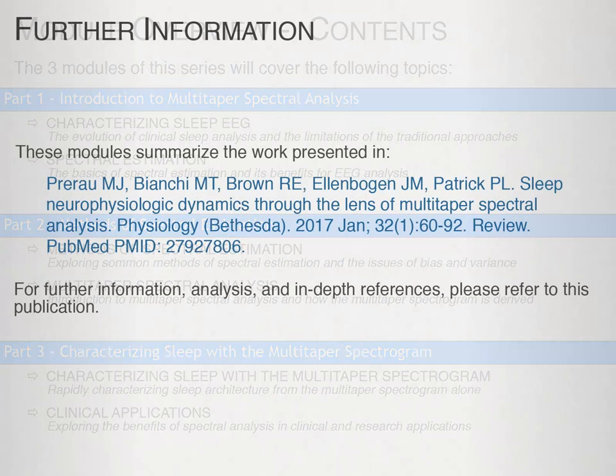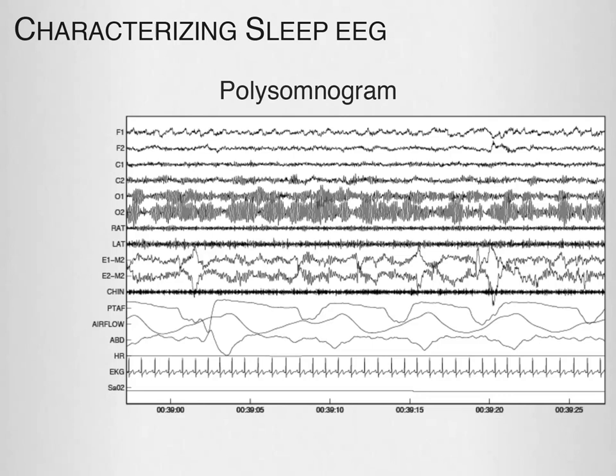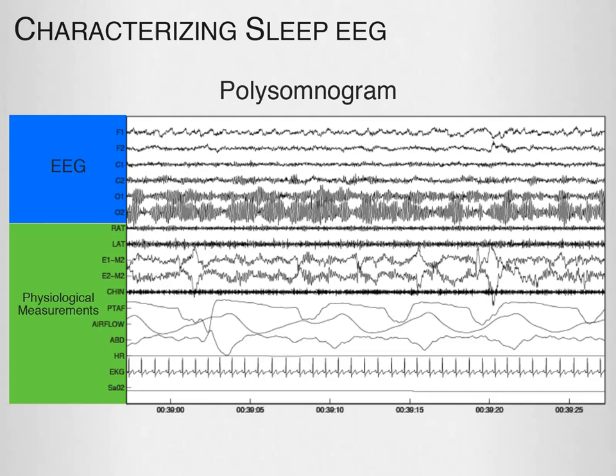These modules summarize the work presented in the publication 'Sleep Neurophysiological Dynamics through the lens of multi-taper spectral analysis.' Clinically, we typically view the sleep EEG in terms of the polysomnogram, which displays a series of EEG signals as waveforms over time, as well as other physiological measurements such as muscle movement, air flow, and EKG. To the lay viewer, this is very complicated — these are complex waveforms that require skilled professionals to properly decipher.